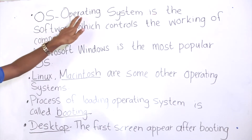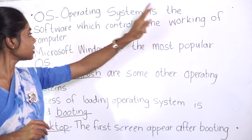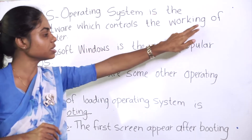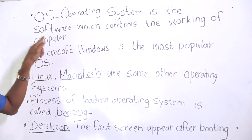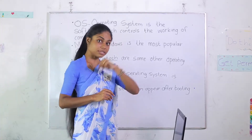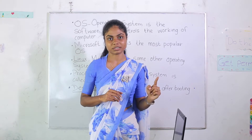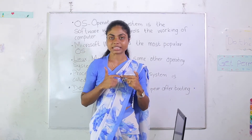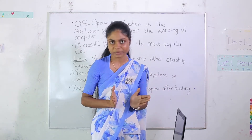OS means operating system. It is the software which controls the working of a computer. You already know what software is — the applications inside the computer are the software. So the operating system is the one who controls the computer.